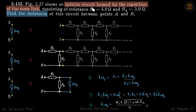We have an infinite circuit which is formed by the repetition of the same link. The link is R1 and R2 — this is a unit which is getting repeated till infinity. We need to find the equivalent resistance of the circuit across these two points A and B.